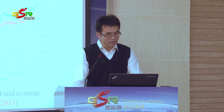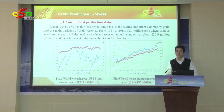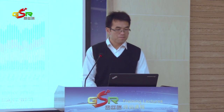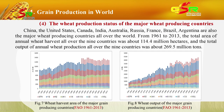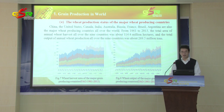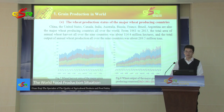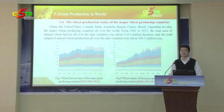From 1961 to 2013, 32.1 million tons of wheat were used as seed annually. The total annual average harvest area was about 221 million hectares, and the total wheat output was about 486 million tons. China, the United States, Canada, Australia, Russia, France, Brazil, and Argentina are the major wheat-producing countries of the world. Their combined annual average wheat harvest area was about 140 million hectares, with total annual wheat output of about 170 million tons.